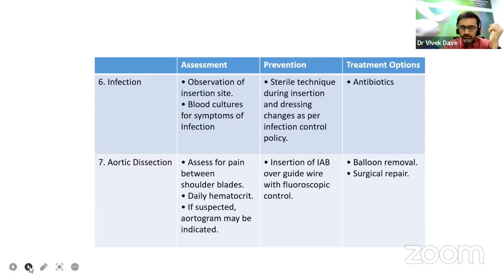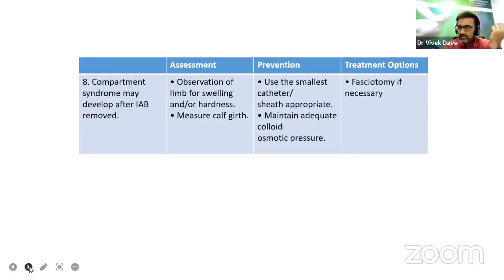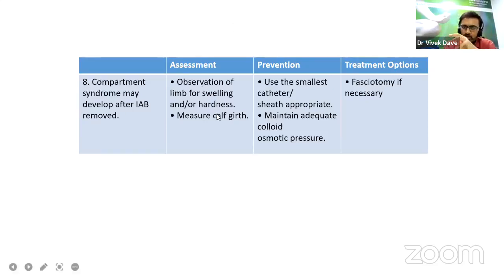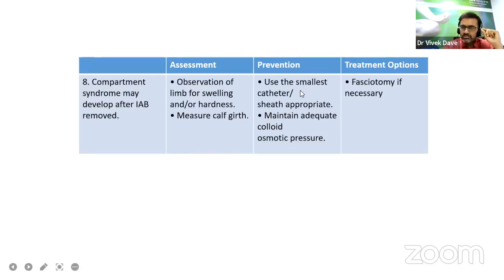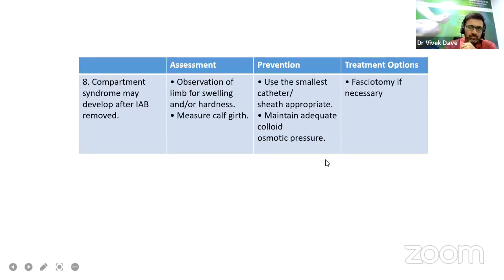Aortic dissection is one of the nasty complications of IABP insertion. Compartment syndrome may develop after IABP removal. Observe the limb for swelling or hardness, measure the calf girth. Prevention: use the smallest catheter sheath appropriate and maintain adequate colloid osmotic pressure. If there is a problem, address it with fasciotomy if necessary.